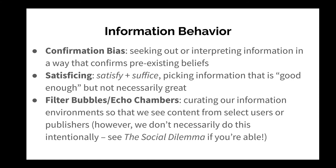The second piece is satisficing — a combination of the words 'satisfy' and 'suffice.' It's the idea that humans often pick information that is good enough, but not necessarily great. Finally, you might have heard of filter bubbles or echo chambers. This is when we curate our information environments so that we see content from select users or publishers — for example, defriending people on Facebook who don't share your political views. We don't necessarily do this intentionally. I highly recommend seeing the film 'The Social Dilemma,' which really gets into the ways social media companies specifically tailor what you're seeing on your phones and computers.